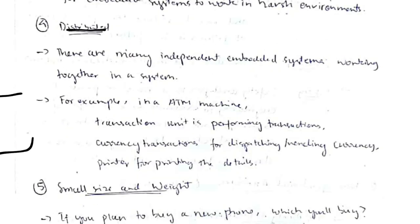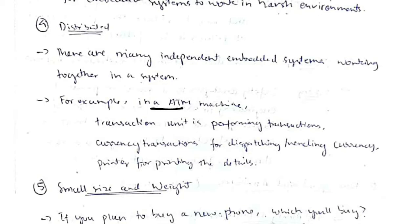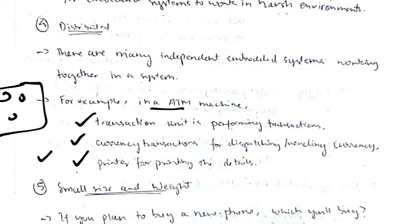The fourth characteristic is distributed. In a system, there isn't just one embedded system performing the whole task — there are many independent systems. For example, in an ATM machine, there are many embedded systems: one for performing the transaction, one for generating currency, one for displaying and printing results, and so on. They all combine to perform a common goal.